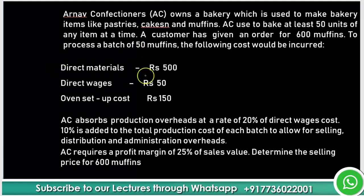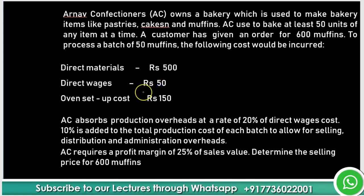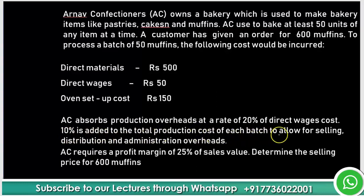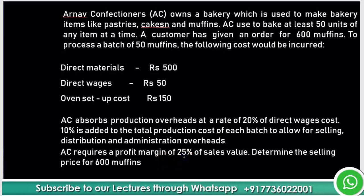Direct materials: rupees 500, direct wages: rupees 50, oven setup cost: rupees 150. AC absorbs production overheads at the rate of 20% of direct wage cost. 10% is added to the total production cost of each batch to allow for selling, distribution, and administration overheads. AC requires a profit margin of 25% on sales value.